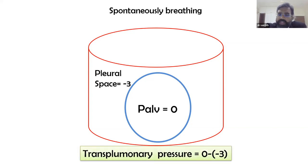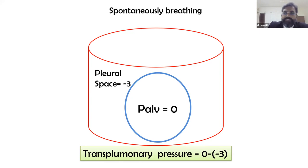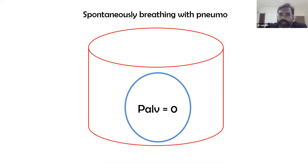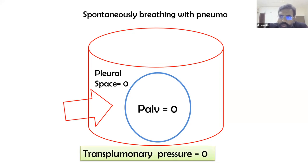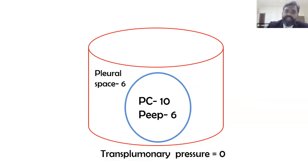If alveolar pressure is zero and pleural pressure is −3, transpulmonary pressure is +3, keeping the alveolus distended. In a pneumothorax, pleural pressure becomes zero, so transpulmonary pressure is zero and the alveolus collapses. With pleural effusion causing pleural pressure of +6 and PEEP of only 6, the transpulmonary pressure is zero — insufficient to keep alveoli open.